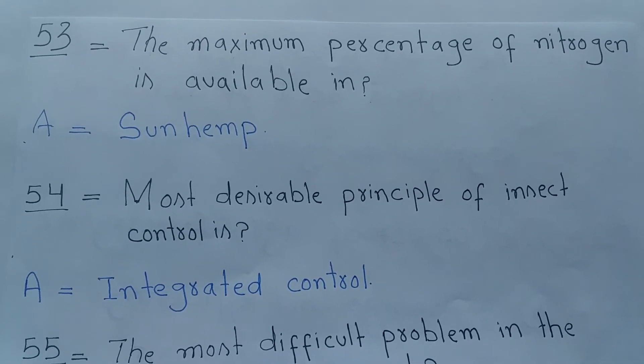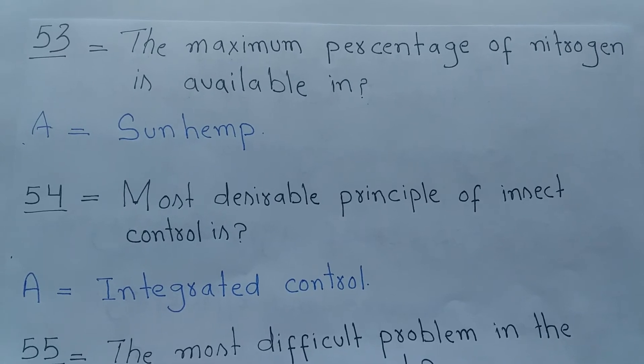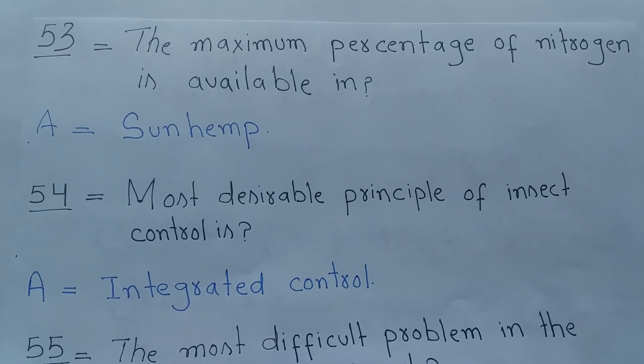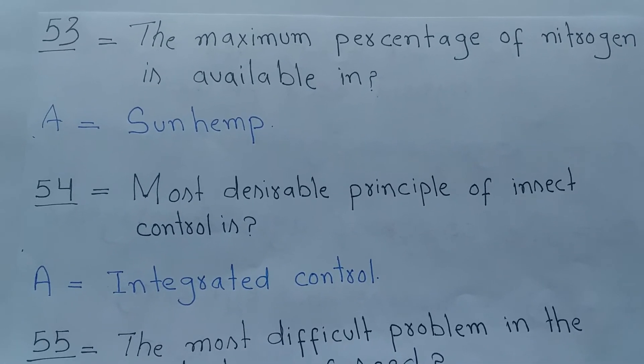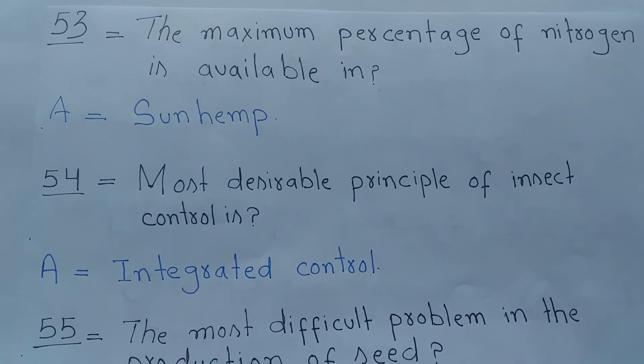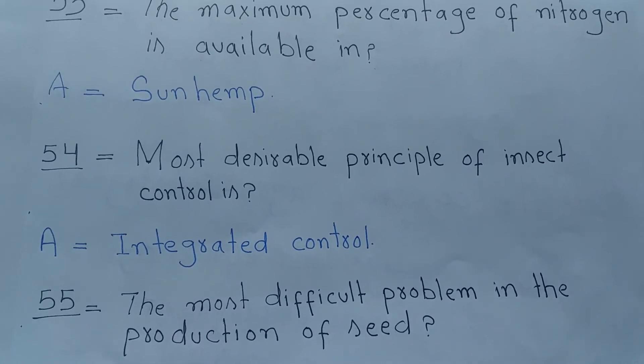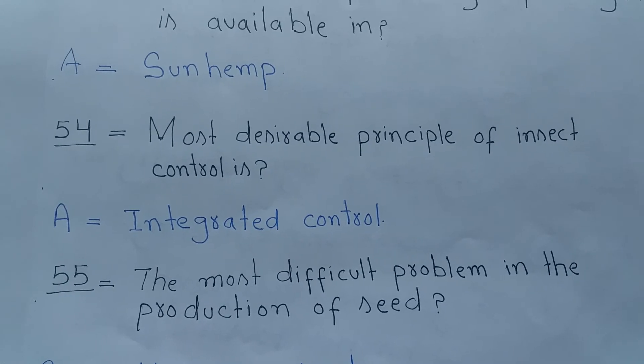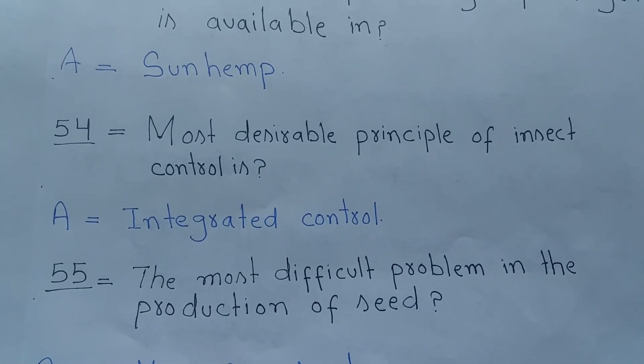Question number 53: The maximum percentage of nitrogen is available in? Answer is Sun hemp. Question number 54: The most desirable principle of insect control is? Answer is Integrated control.